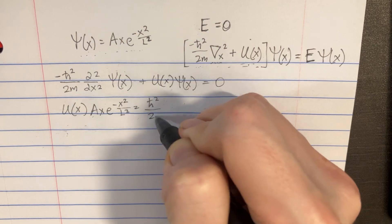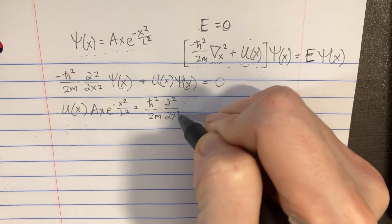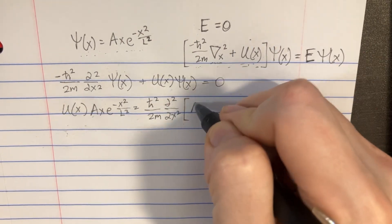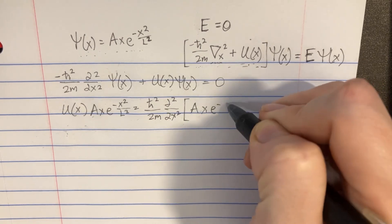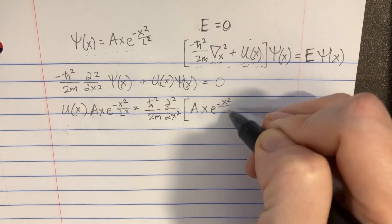h bar squared over 2m, and then we have the second derivative, but that's on A e to the negative x squared over l squared.